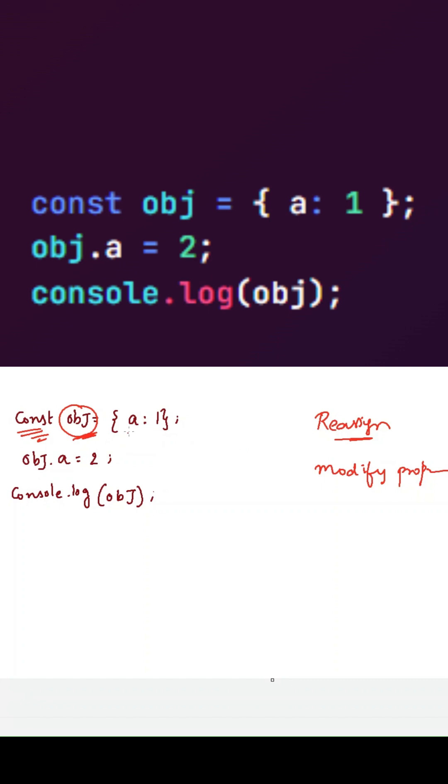If you see here, what is this reassignment? If you are trying to do like this: object is equal to b colon 2 or a colon 2, this is called reassignment. Whereas here, we are trying to modify the properties of an object. So this is called modifying the properties.